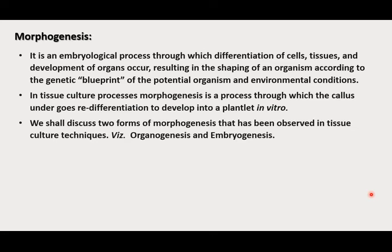Now let us see about morphogenesis. It is a biological process through which differentiation of cells, tissues, and development of organs occur, resulting in shaping of an organism according to the genetic blueprint and environmental conditions. But in tissue culture, morphogenesis means it is a process through which the callus undergoes re-differentiation to produce a plantlet in vitro. There are two forms of morphogenesis in tissue culture: organogenesis and embryogenesis.